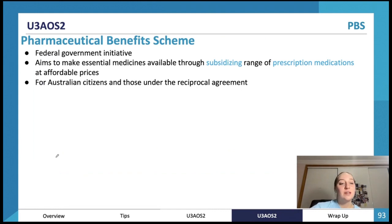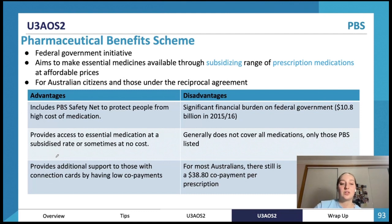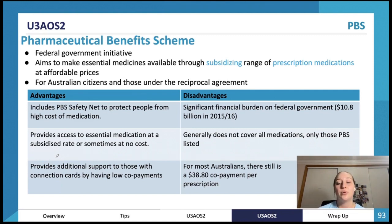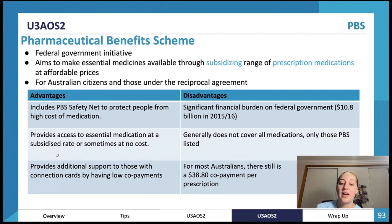The Pharmaceutical Benefits Scheme (PBS) covers medications classed as the most important or necessary ones for Australians and subsidizes them to make them much cheaper and more accessible. Advantages: there's a safety net so people spending a lot on medications get a further discount. It provides access to essential medication at cheaper prices and additional support to those with concession cards via low co-payments. Disadvantages: it places a significant financial burden on the federal government, doesn't cover all medications — only those listed on the PBS — and most Australians still have to make a payment even though it's reduced.